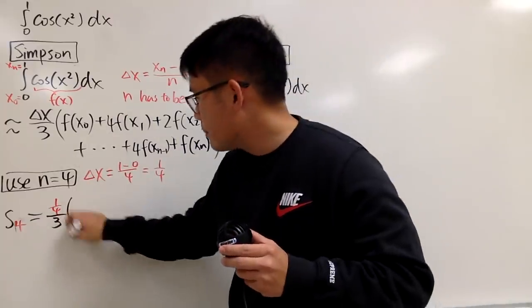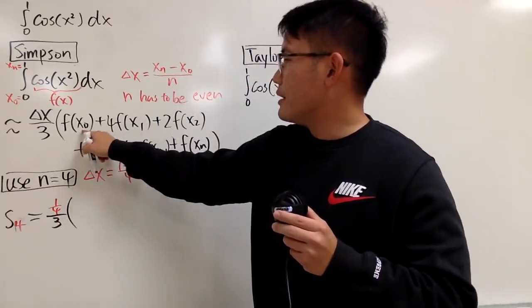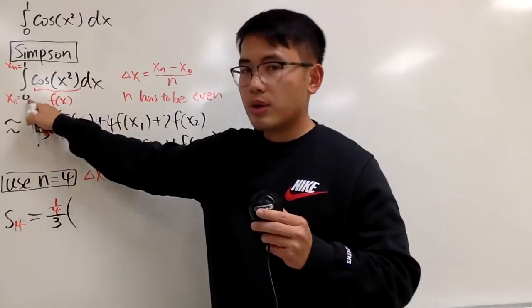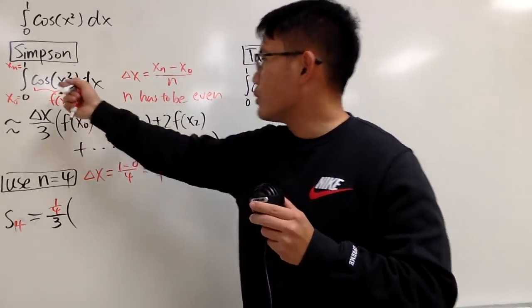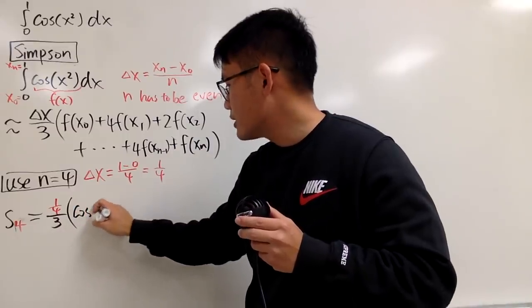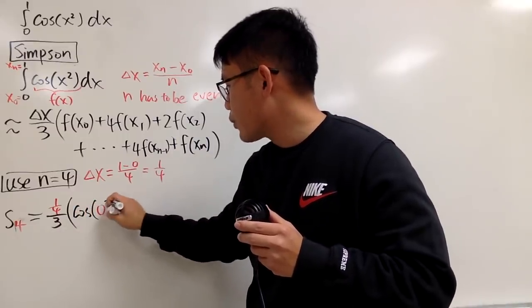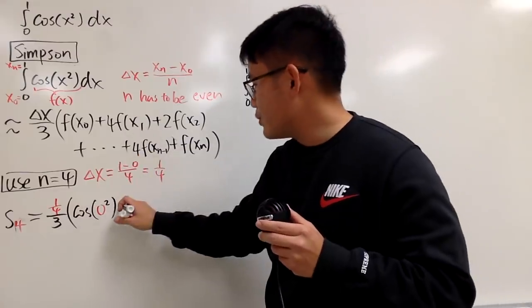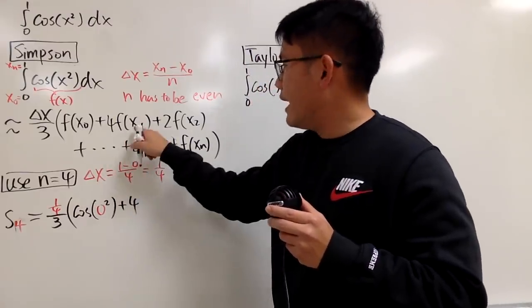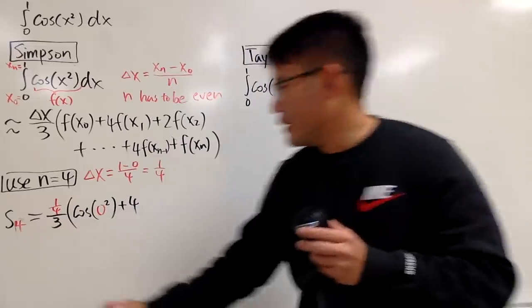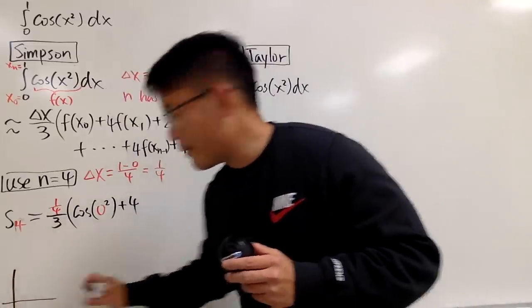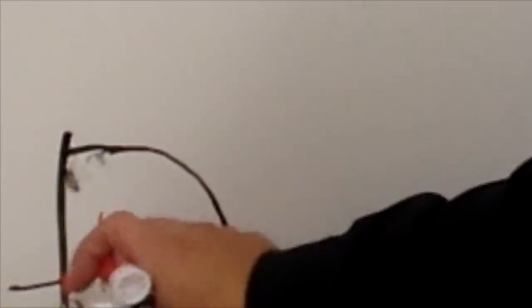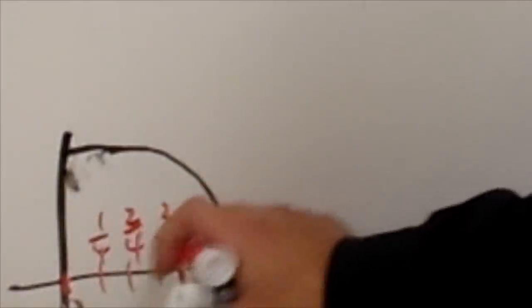Then you multiply by, what's f of x₀? Well, x₀ is 0, so we have cosine of 0 squared. Next you add 4, and then what's the next x value? You can make a quick sketch. You go from 0 to 1 and cut this into four pieces. So this is 1 fourth, 2 fourths, 3 fourths, and then 4 fourths. So it shouldn't be too hard.